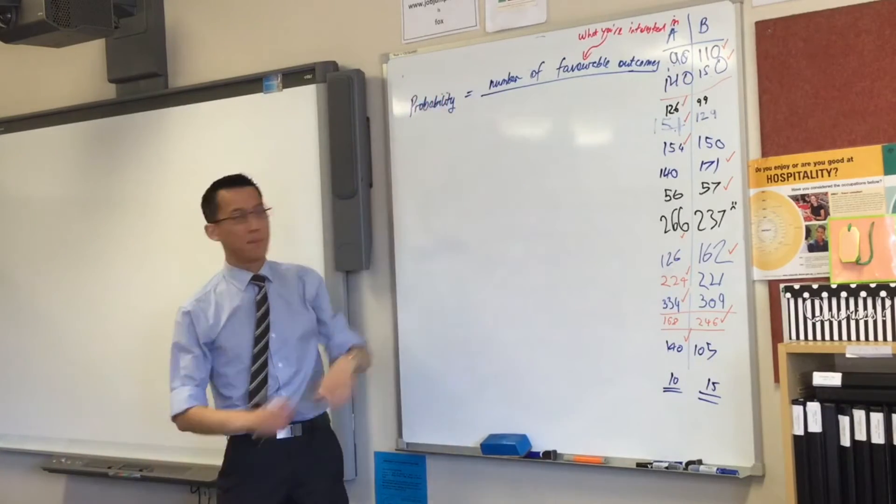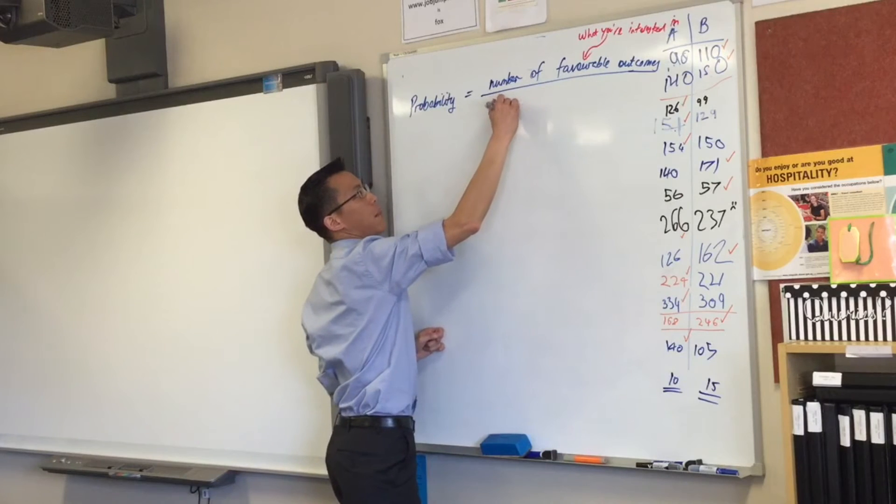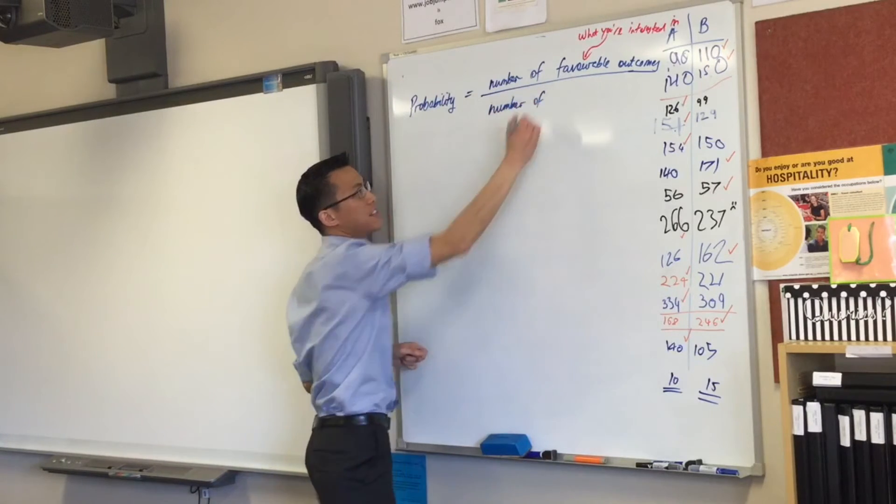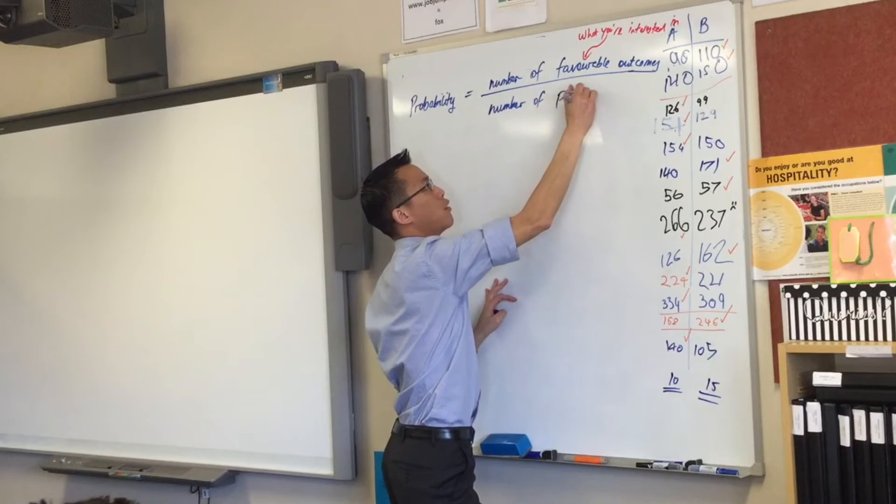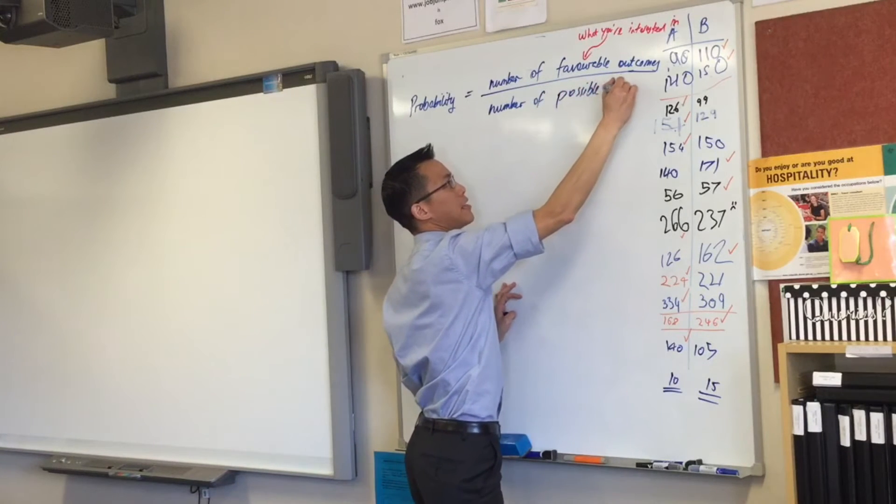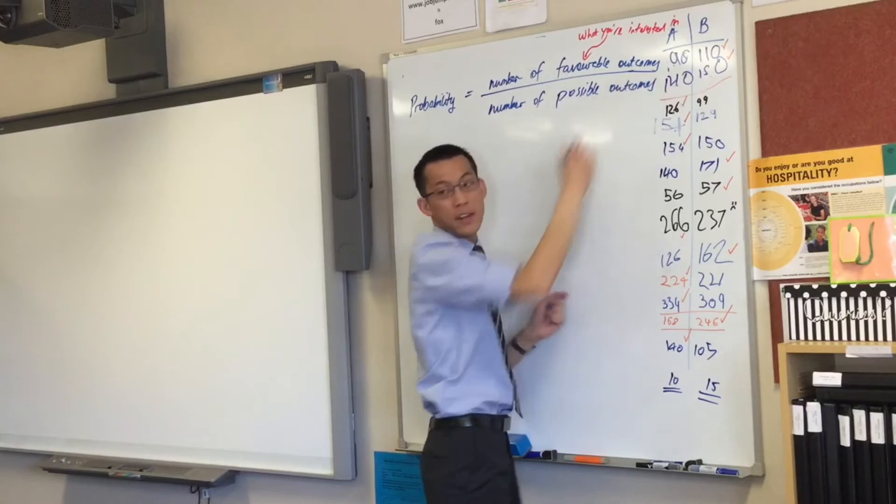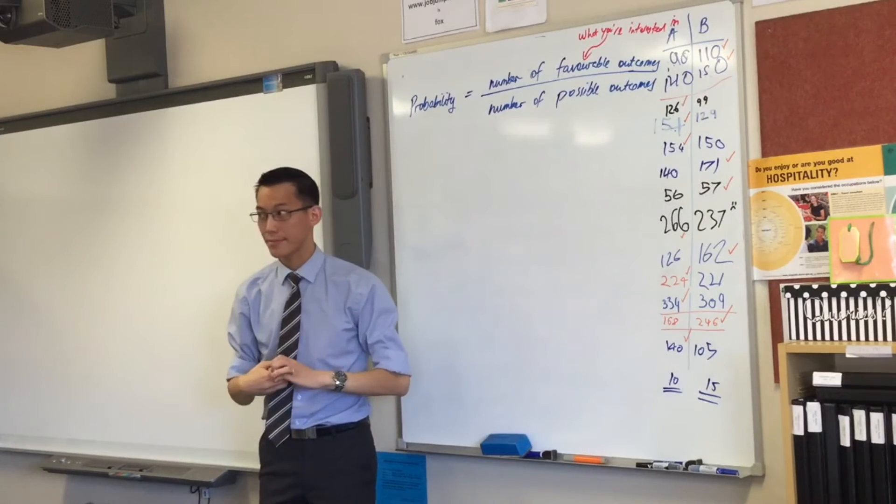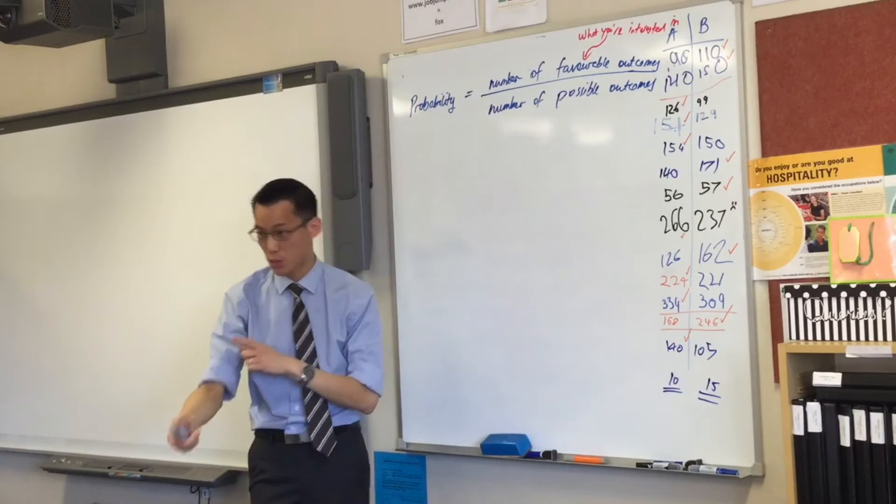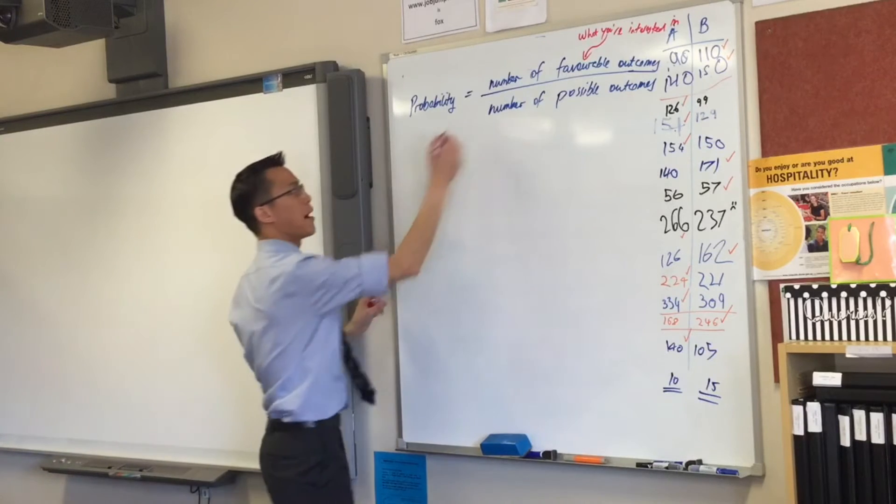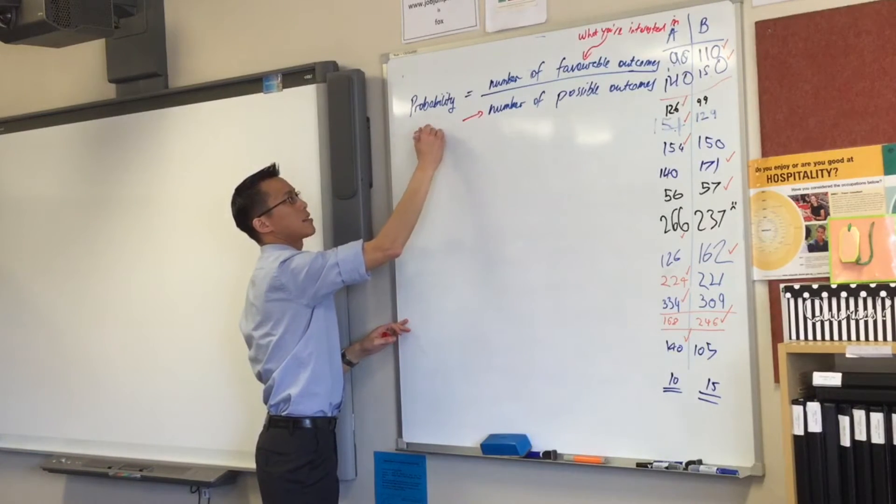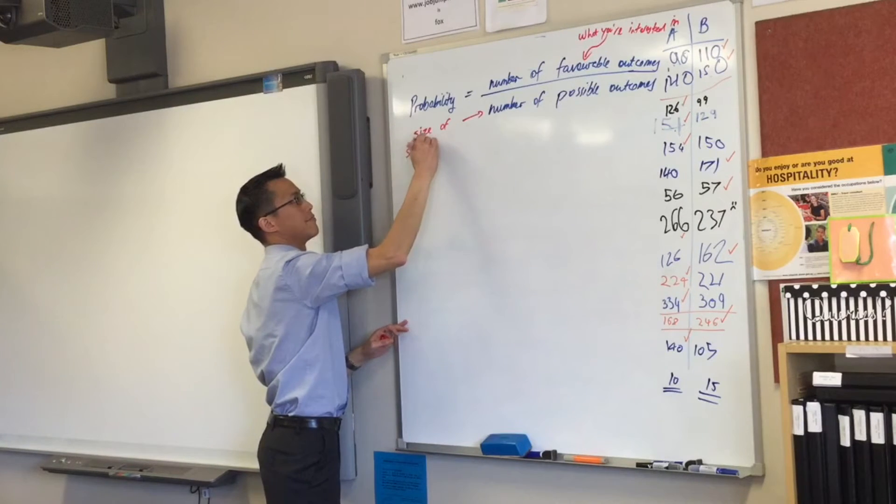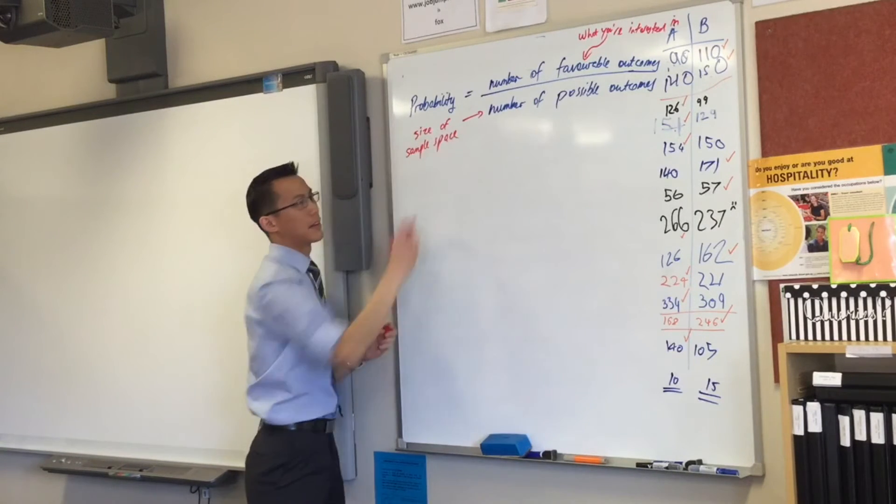Now, that's the numerator of the fraction, what's on the bottom? It's also a number, but it's not the number of favourable outcomes, it's the number of possible outcomes. Now, we already have a name for this. We just mentioned it one minute ago. What do we call this again? Space. This is the sample space, okay? So, this part down the bottom here is the size of the sample space.